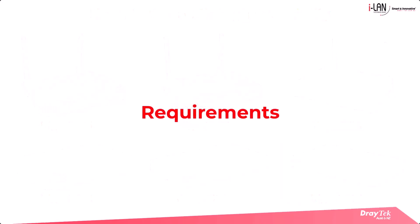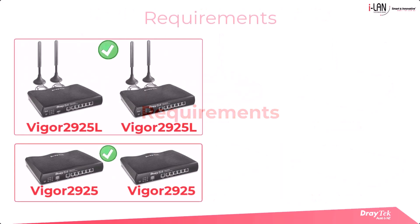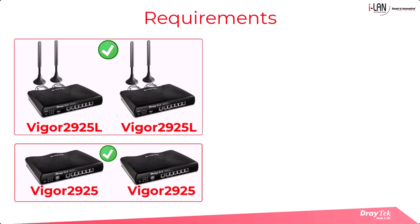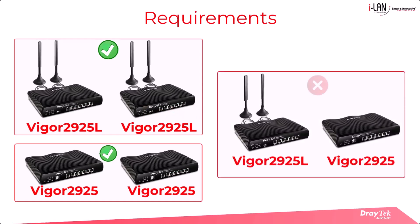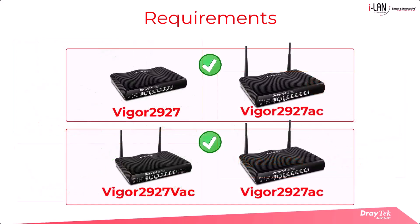There are some differences between older and newer models to be aware of. Some older models like the Vigor2925 series require identical routers for high availability — high availability wasn't supported between two different models even if they were from the same series. However, in newer models the routers still need to be from the same series but can differ in version. For example, a Vigor2927 can be paired with a Vigor2927AC.